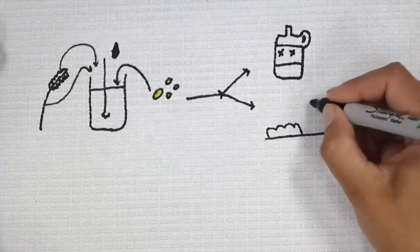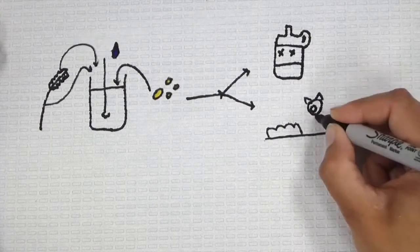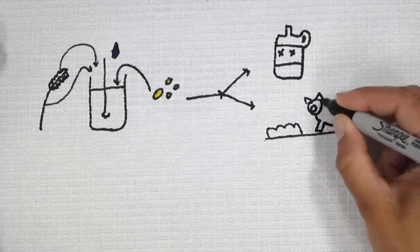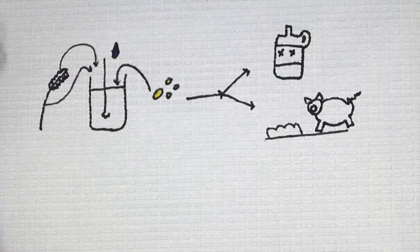The second, lesser known product is dried distiller's grains and solubles. This is what is left over after the ethanol is distilled and is normally fed to livestock.